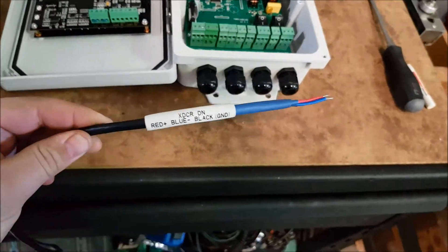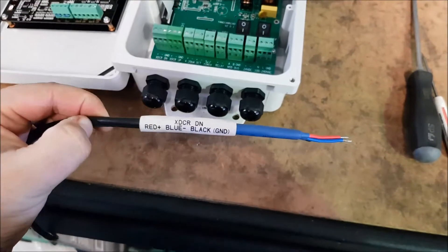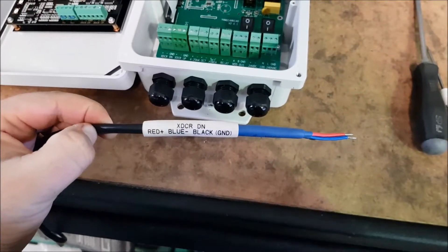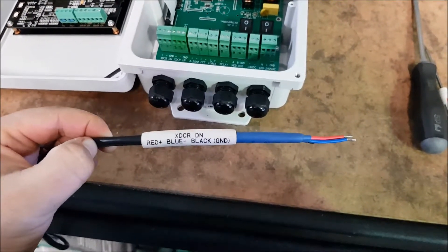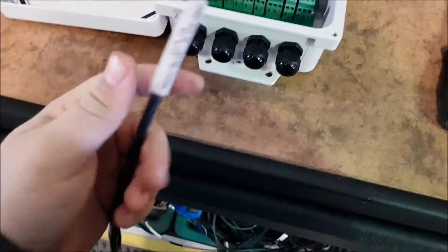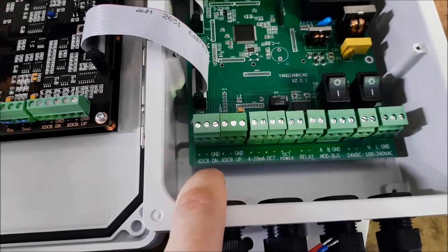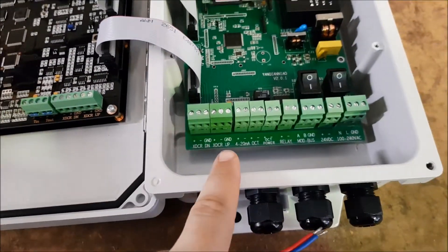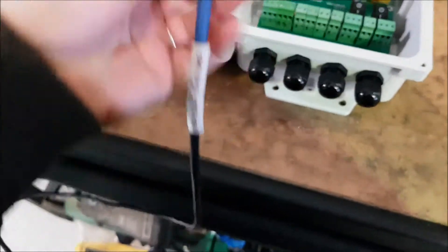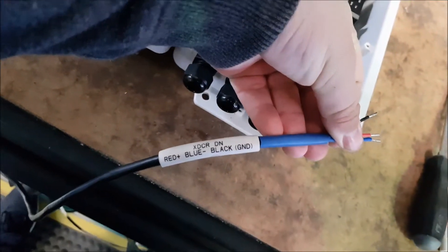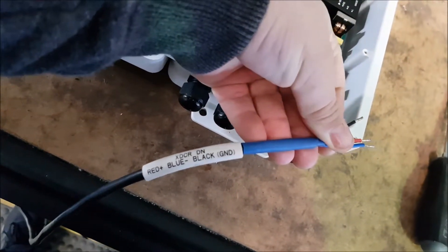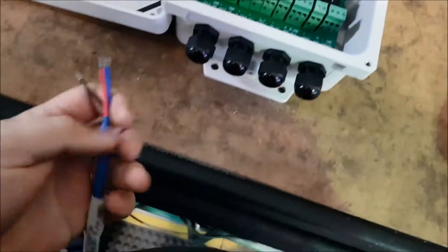So your transducers, first of all, you'll have a cable like this. So you'll see that it says XDCRDN, now that's your downstream cable. So this will go onto XDCRDN and your other cable will be for your upstream. So we'll just follow these colours here. So red is positive, blue is negative and black is ground.